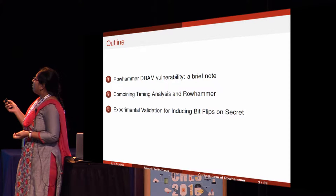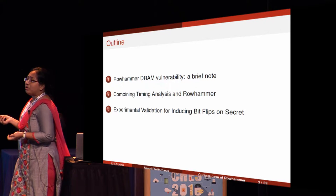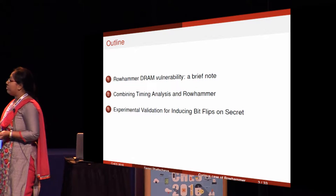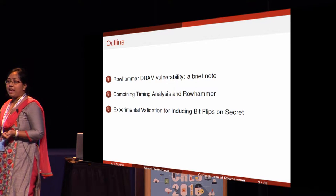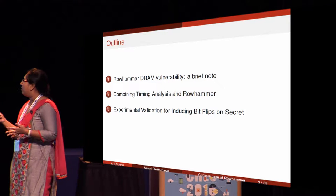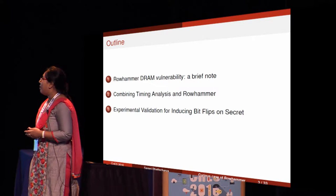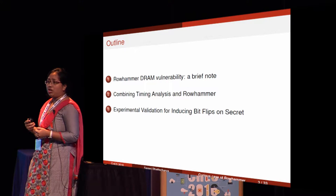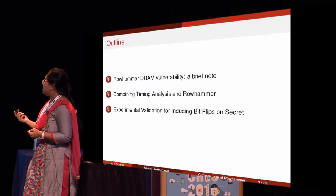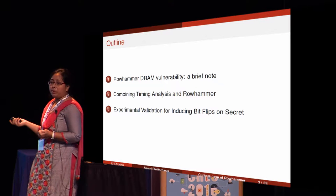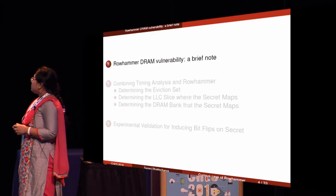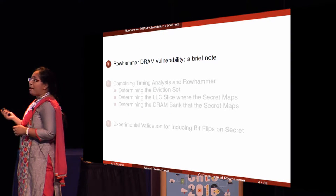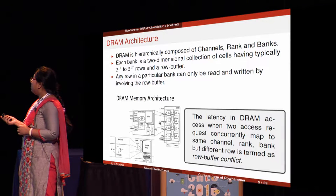The outline of the talk: first I'll give a brief introduction of DRAM architecture and the RowHammer vulnerability, then I'll go to the methodology we used and the experimental results.